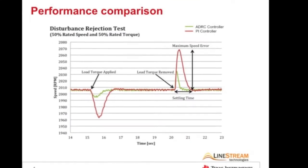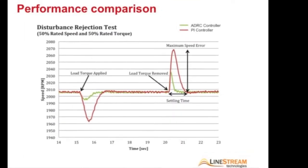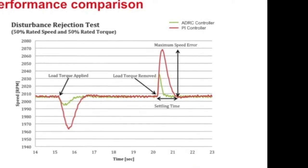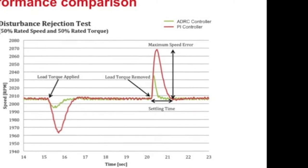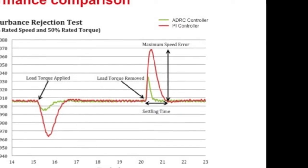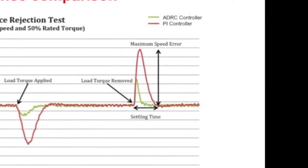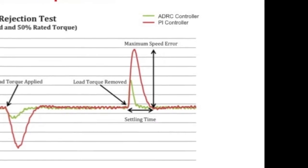We can compare these controllers using a disturbance rejection test. We used PI and ADRC to control the same motor. We ran the motor at 50% of the rated speed and torque. We introduced a pulse disturbance through a dynamometer and measured the response.